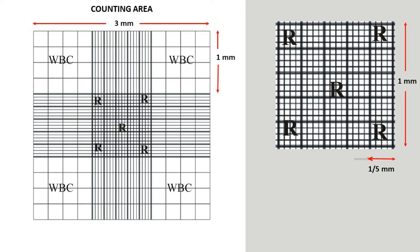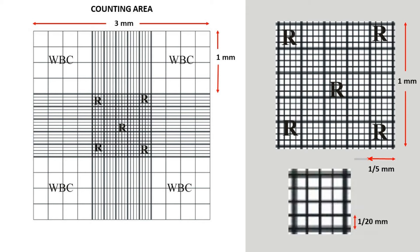The central RBC square is again divided into 16 small squares by 3 vertical and 3 horizontal lines. All these small squares have triple borders, while all surrounding small squares have a single border line. Each small RBC square is 1/20 mm in length and width.